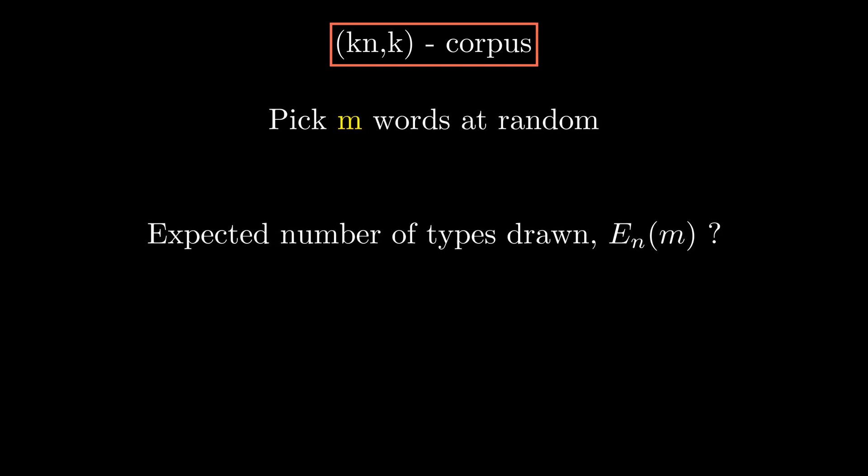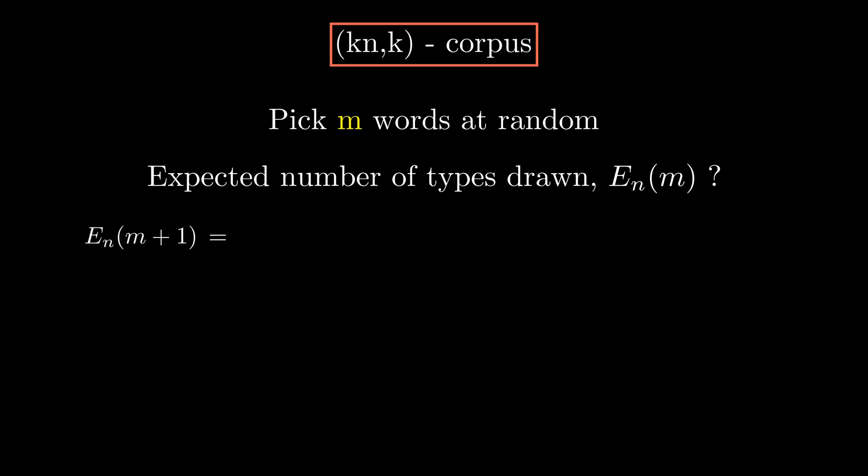Expected number of types for m plus one picked words is whatever we got in a previous stage plus two possible outcomes. Either we pick a new type, or we don't, which simplifies to this.